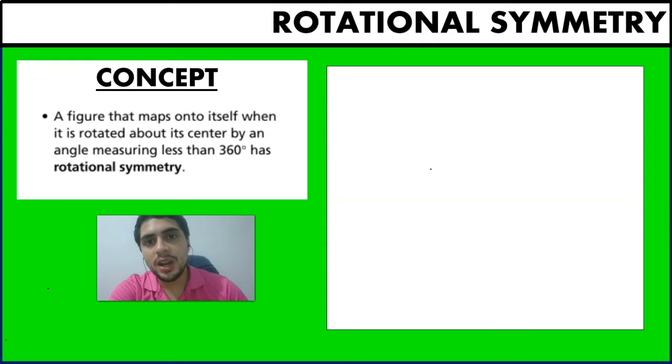So in other words, whenever we rotate an image and it ends up in a position that is like the initial one, so it's going to be the exact same thing or it looks like it's going to be the exact same thing, it's going to have rotational symmetry.